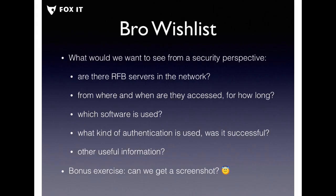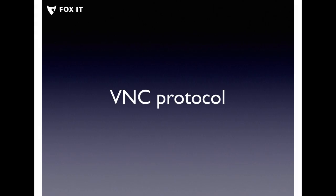Since we were doing passive audits and my colleague was doing this research, I thought it would be great if during a passive audit we could have visibility on VNC servers in the network. So I made a Bro wish list — security questions I'd like to answer using Bro for VNC: Are there RFB servers in the network? From where and when are they accessed? Which software is used? What kind of authentication? Was it successful? And maybe even — could we generate screenshots?